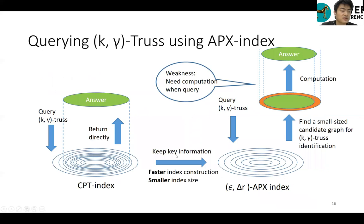Based on CPT index, we can directly get the k-gamma-trust. But for the apex index, we first determine a candidate graph containing k-gamma-trust, and then compute the exact result. So the disadvantage is that the query needs some calculation costs.